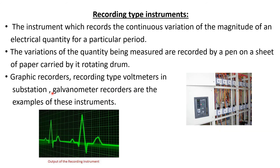Now the last category of analog electrical measuring instrument is the recording type instrument. From the name it is clear that recording instruments record the continuous variation of magnitude of an electrical quantity being measured for a particular period of time. The variations of the quantity being measured are recorded by a pen on a sheet of paper. Here you can see the output of a recording instrument.